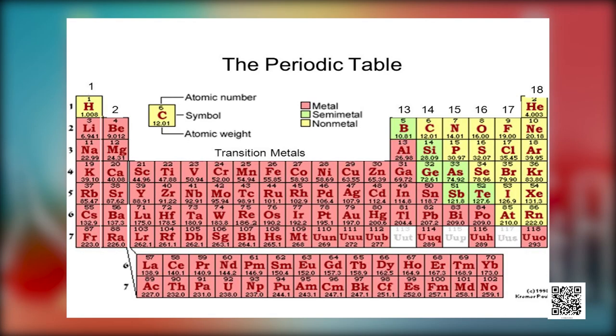The term electronic configuration refers to the distribution of electrons in the shells and orbitals of an atom. The principal quantum number N defines the main energy level known as the shell of an electron and gives its distance from the nucleus. The shell is further divided into subshells — usually S, P, D, and F subshells. The electronic configuration of an atom defines its physical and chemical properties. In the long form of the periodic table, elements with the same principal quantum number are in the same period, with only their outermost shell electronic configuration changing.